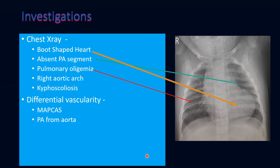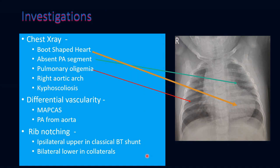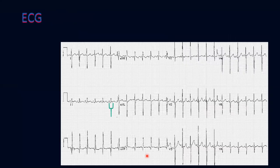On chest X-ray, look for differential vascularity indicating MAPCAs or a pulmonary artery arising from the aorta. Rib notching: classically described in coarctation as ipsilateral upper rib notching, but more common in tetralogy with collaterals is bilateral lower rib notching.